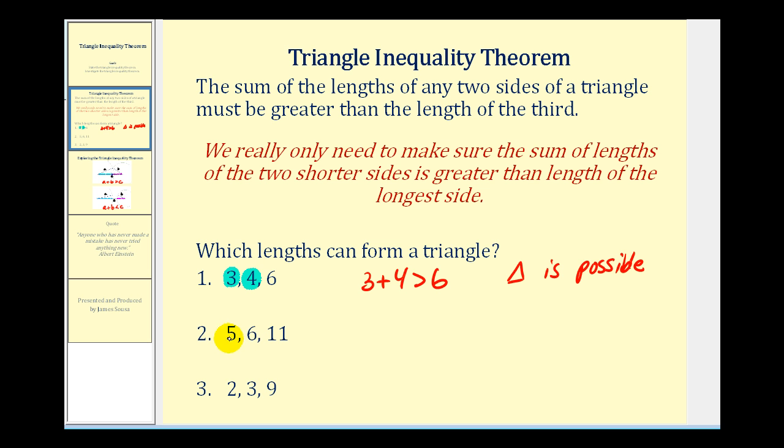For number two, the two shorter sides are five and six. Is five plus six greater than eleven? Well, it's not. It's actually equal to eleven. So, a triangle is not possible.